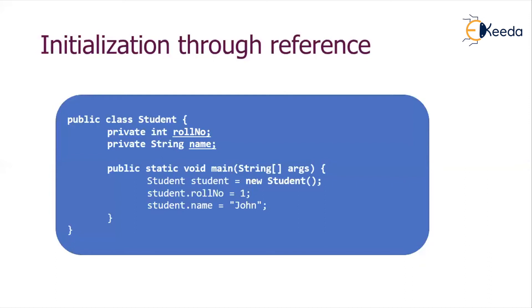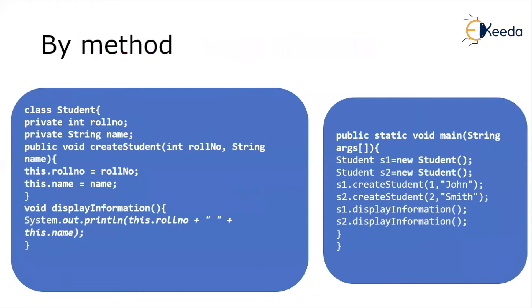The second way of initialization of an object is through a method. There is a method named createStudent, and we pass parameters to that function. These parameters are stored in the properties of that particular object. Two student objects are created, the createStudent method is called, parameters are passed, and then these values are stored in the current instance which is created.